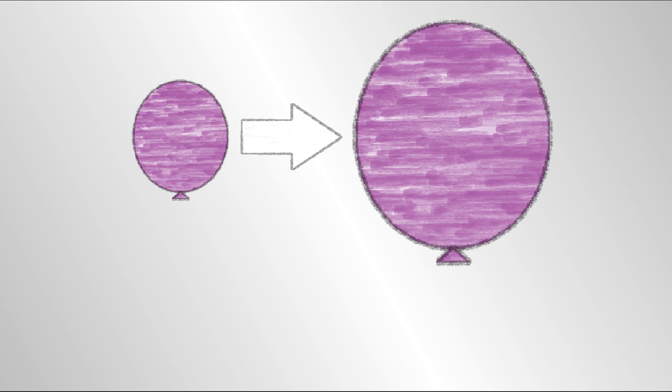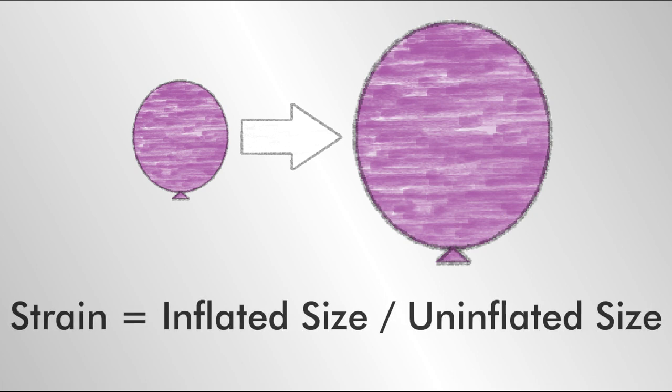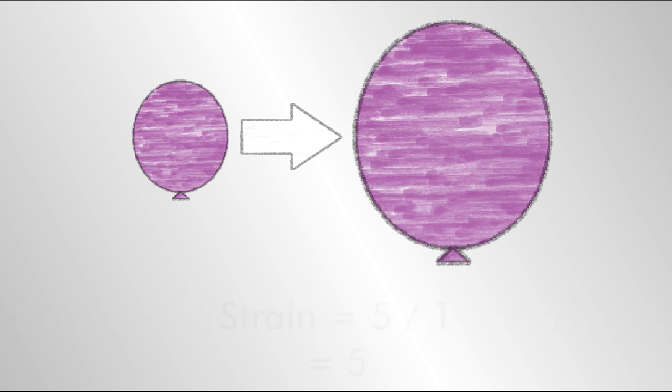These ideas can be illustrated by just inflating a balloon. Strain in the balloon is the change in the balloon's size when it is inflated, divided by the uninflated size. So if a balloon is inflated to five times its original size, the strain is equal to five.